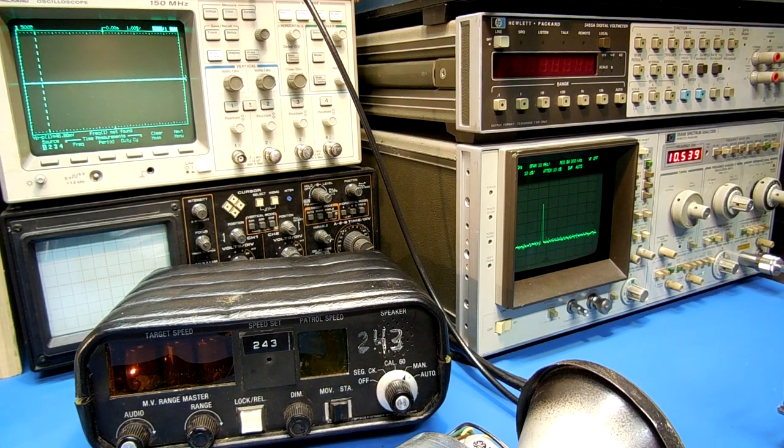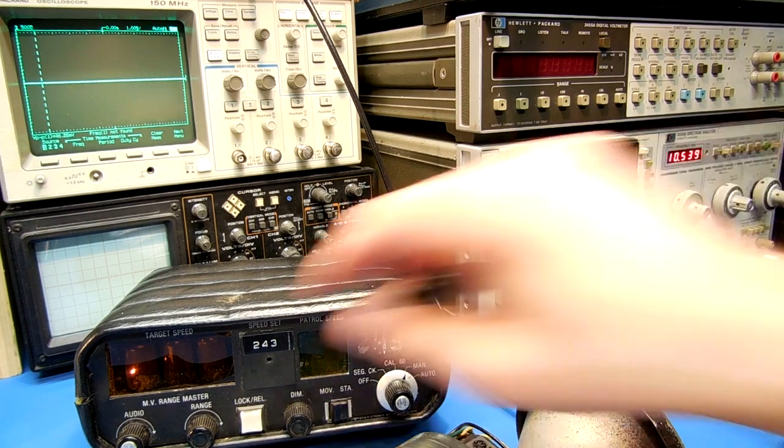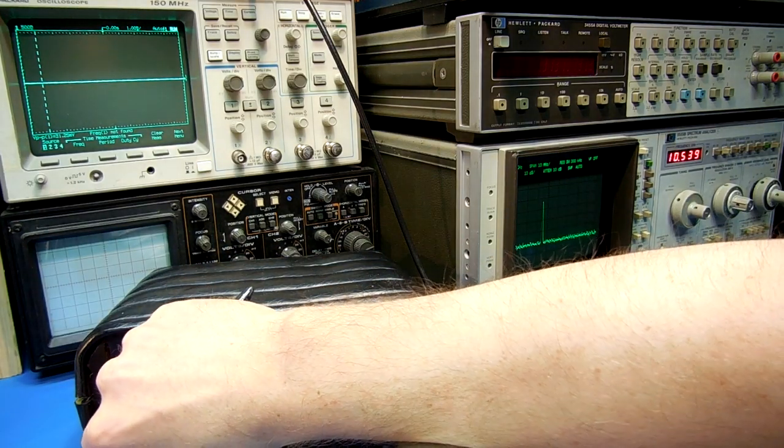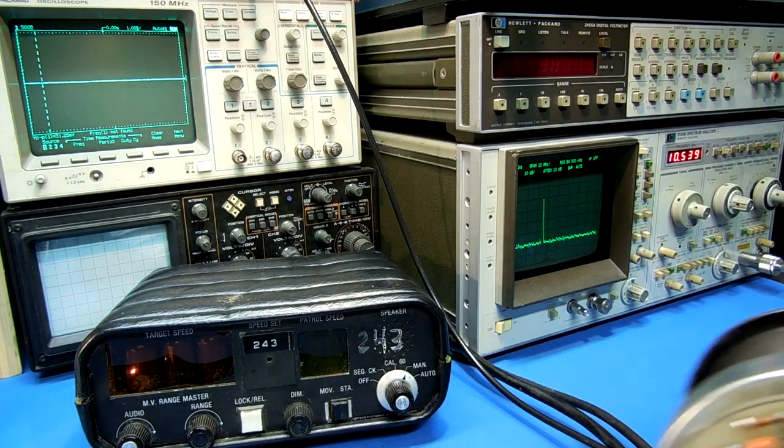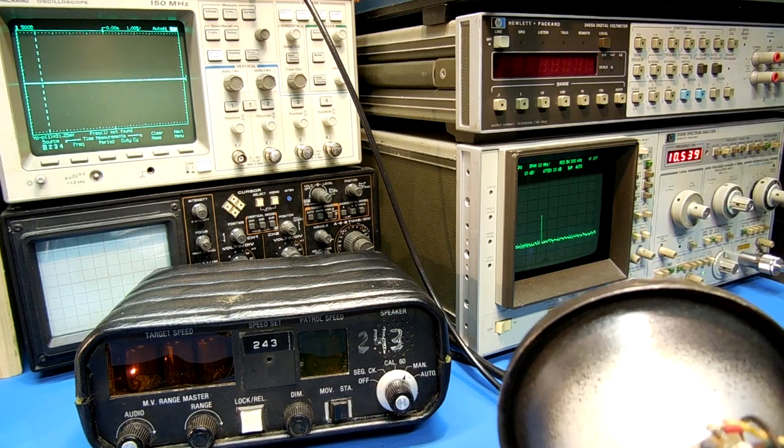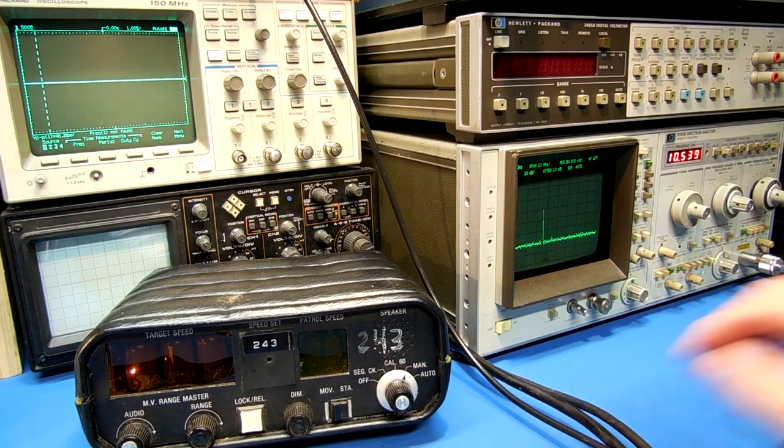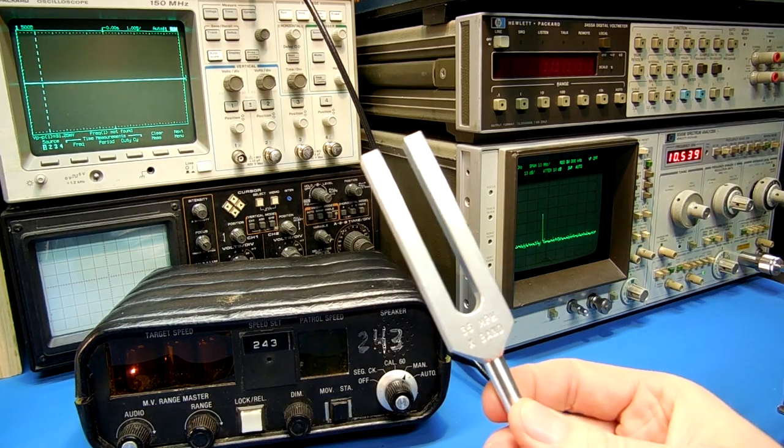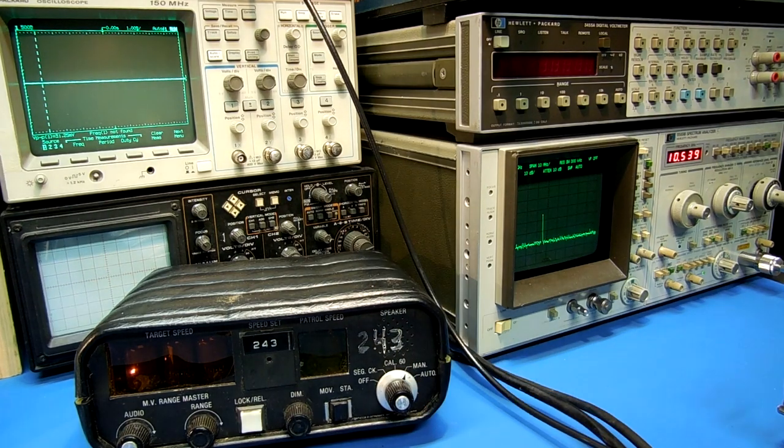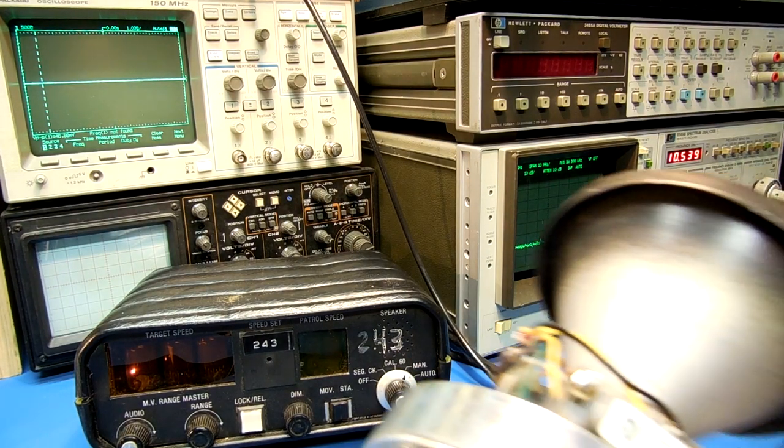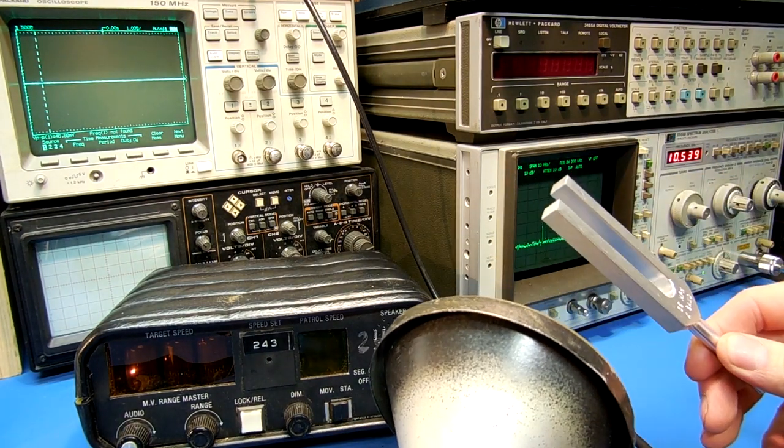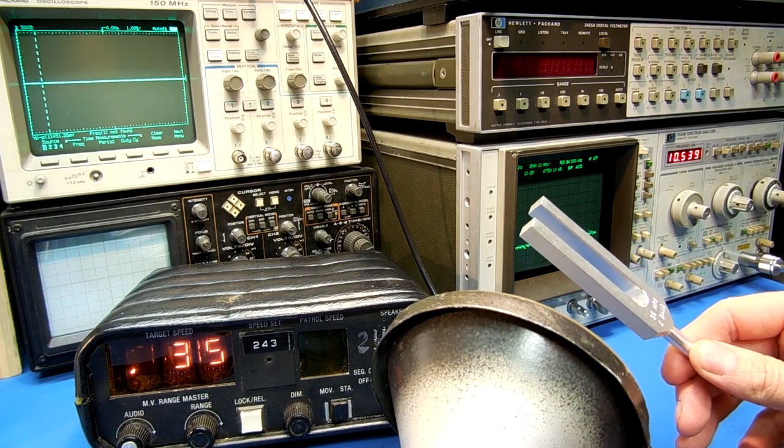At about 10.5 gigahertz right now. I'll turn up the audio on the Rangemaster. You're just hearing random noises. Here's the 35 mile per hour tuning fork. But, you know, it does work.